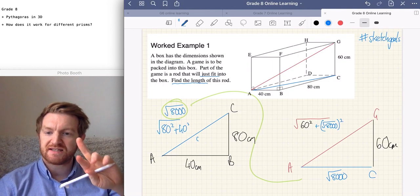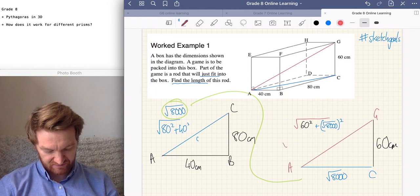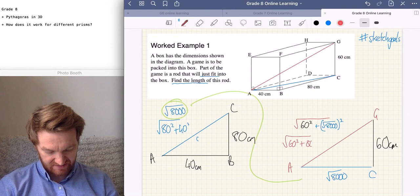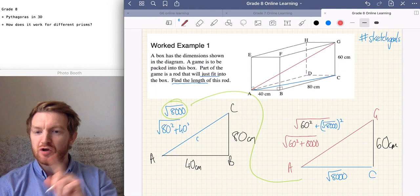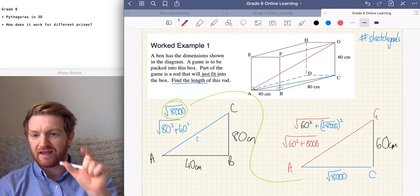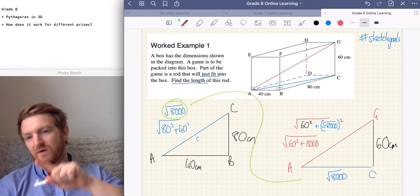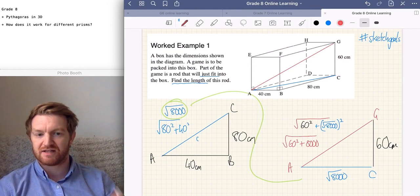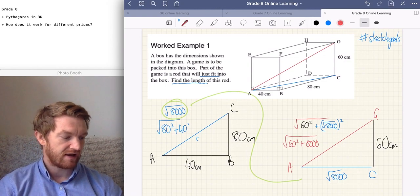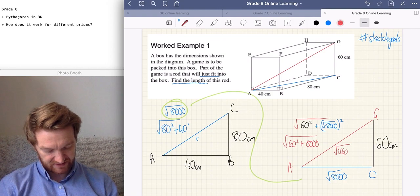Now, when we square root and square something, those two actually cancel out. So, it actually becomes the square root of 60 squared plus the 8,000. And we just cancel out the square root. So, by not putting it as a decimal and not simplifying it, but just leaving it as that root 8,000, then by squaring the square root, it just becomes the number. Instead of the square root of 8,000, it's just 8,000. Then, once we do that on the calculator, it will give us the square root of 11,600.